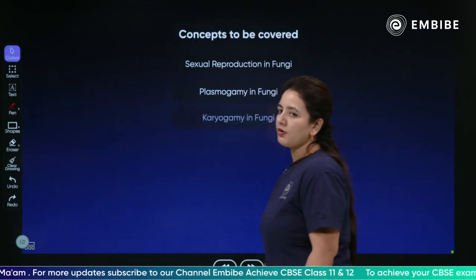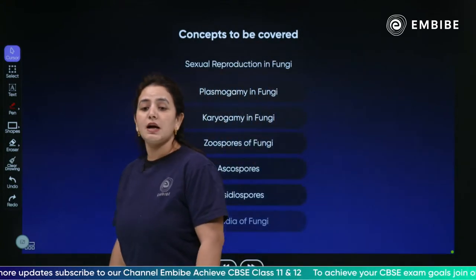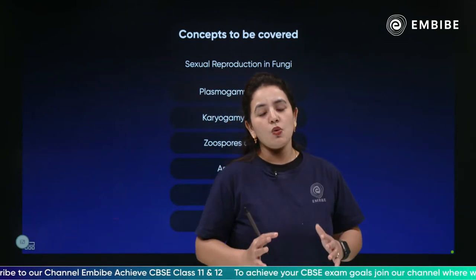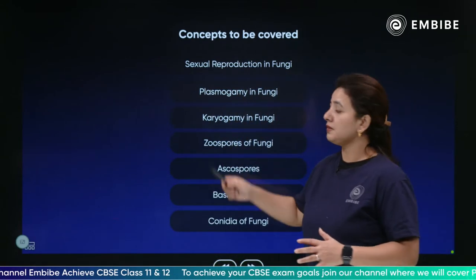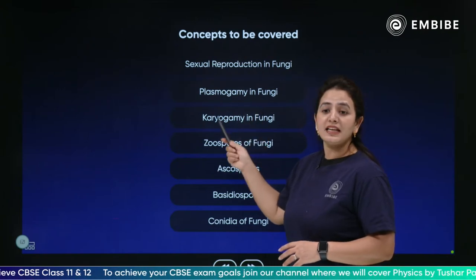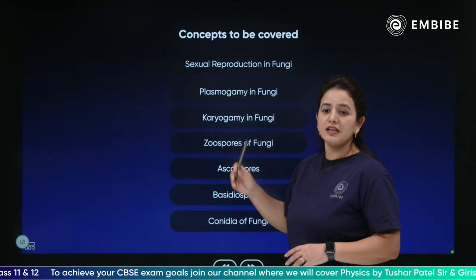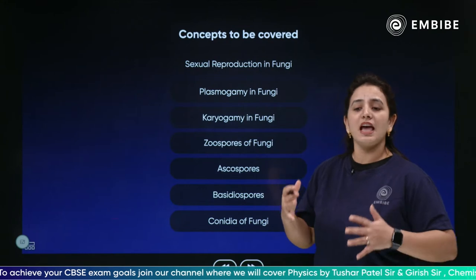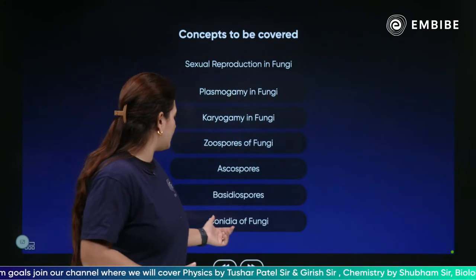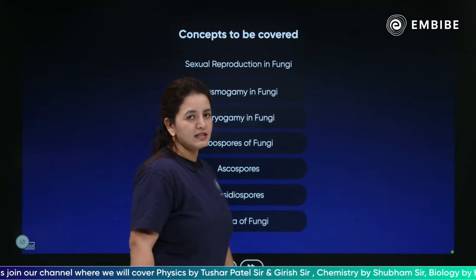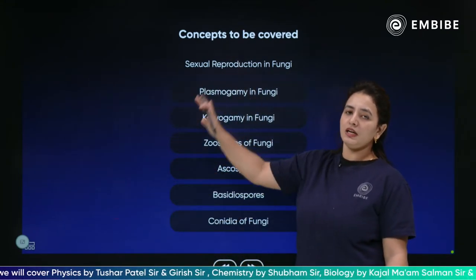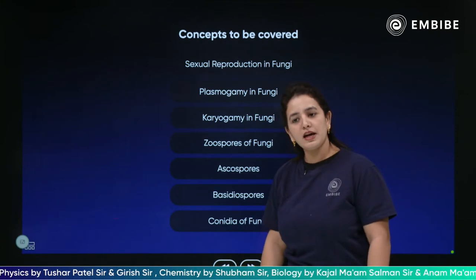Whatever we are going to discuss today - we are going to discuss about sexual reproduction in fungi, which basically constitutes the plasmagamy taking place in fungi, the karyogamy happening in fungi, the zygospore formation, the ascospore formation, the basidiospore formation, and the conidia which are being formed in fungi. All these concepts will be covered in today's session.